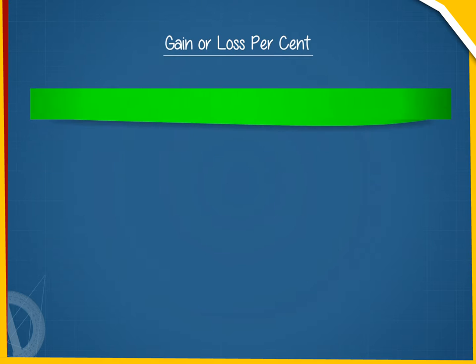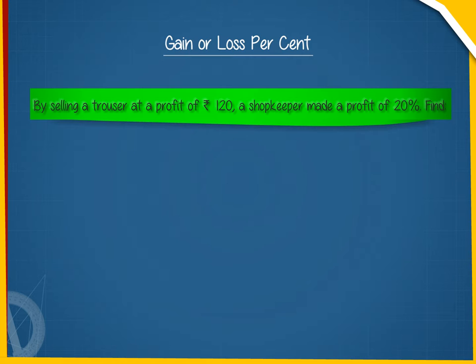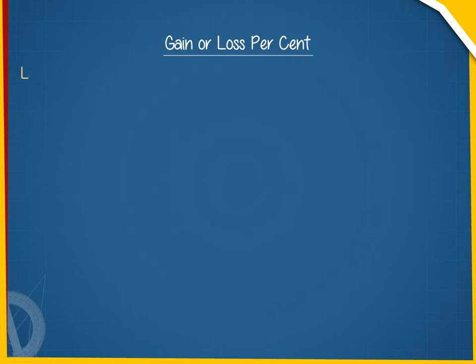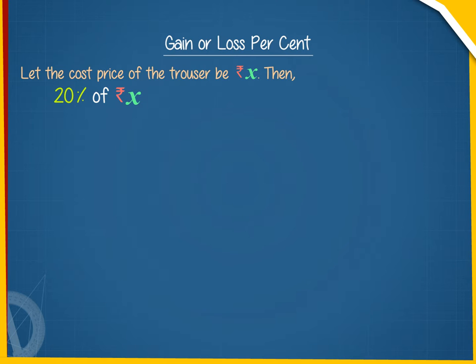Let us consider a problem: by selling a trouser at a profit of rupees 120, a shopkeeper made a profit of 20 percent. Find (a) the cost price and (b) the selling price. Let the cost price of the trouser be rupees x. Then 20 percent of rupees x equals rupees 120, therefore 20 upon 100 into x equals 120.